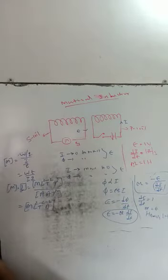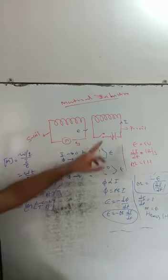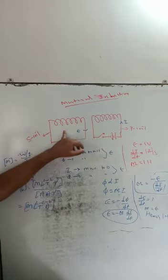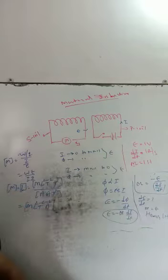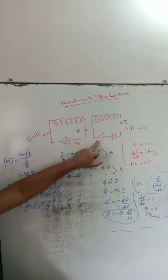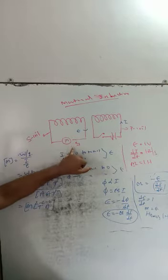Mutual induction. In this coil and coil experiment, there are two coils — one is the primary coil and another one is the secondary coil. This primary coil consists of a battery and also a tap key, and its neighboring secondary coil has a sensitive galvanometer.